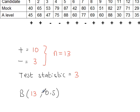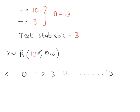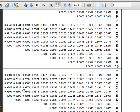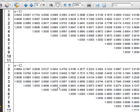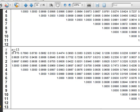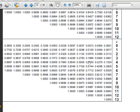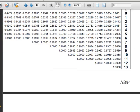So the binomial distribution will have 13 trials. This is still 0.5 — it's always 0.5. Based on that 13, write down the values that X can take. Now we go to the binomial tables where N is 13. P will be 0.5, so that's the last column — it's always the last column.